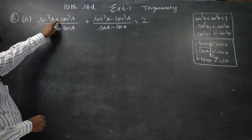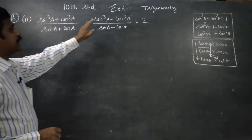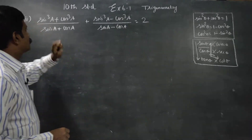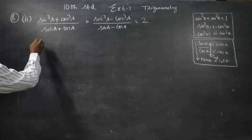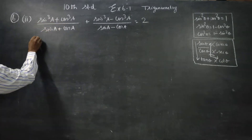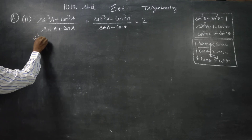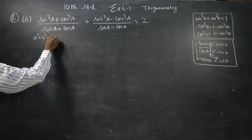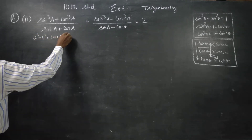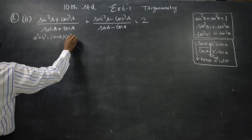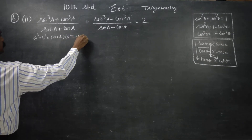This is a cube plus b cube. This is a cube minus b cube. a cube plus b cube would be the formula, so this sum will be done. What is a cube plus b cube algebra? a plus b, a square minus ab plus b square.